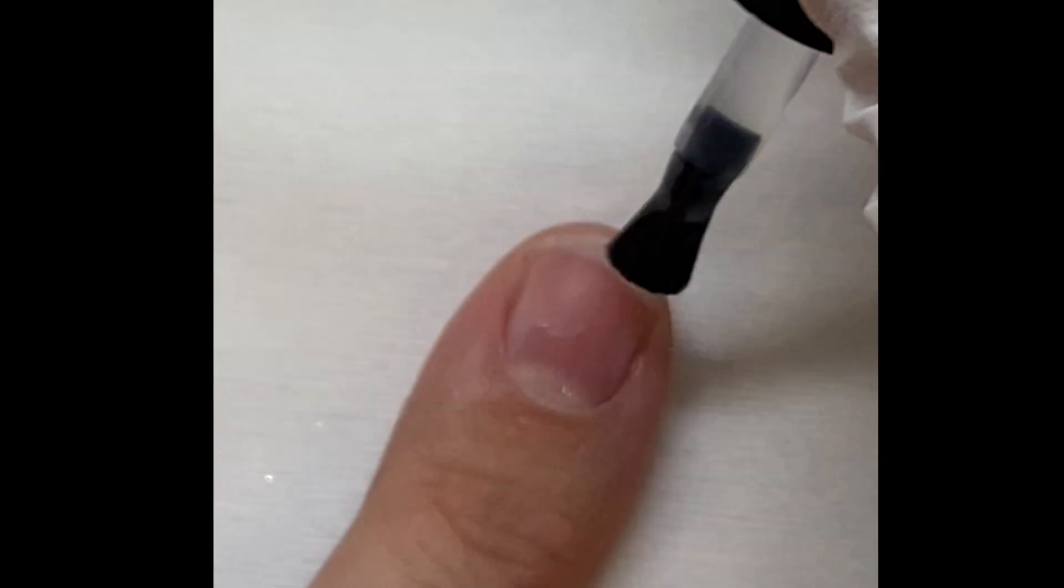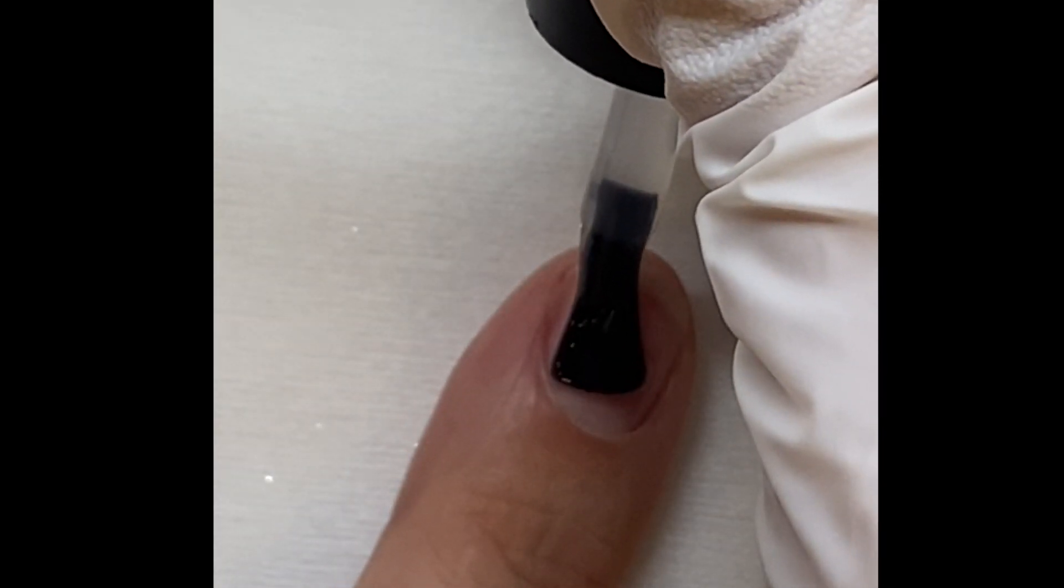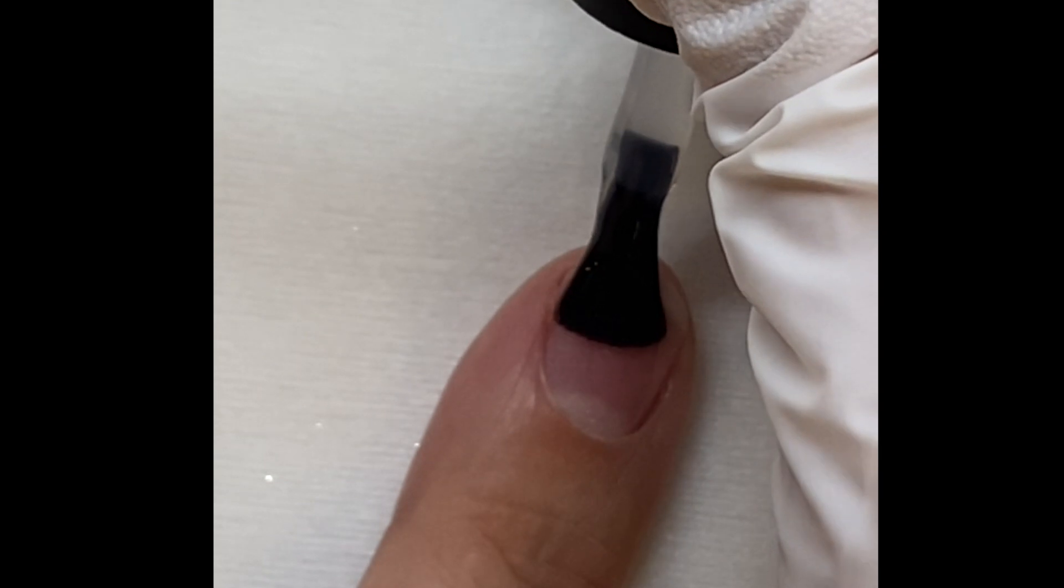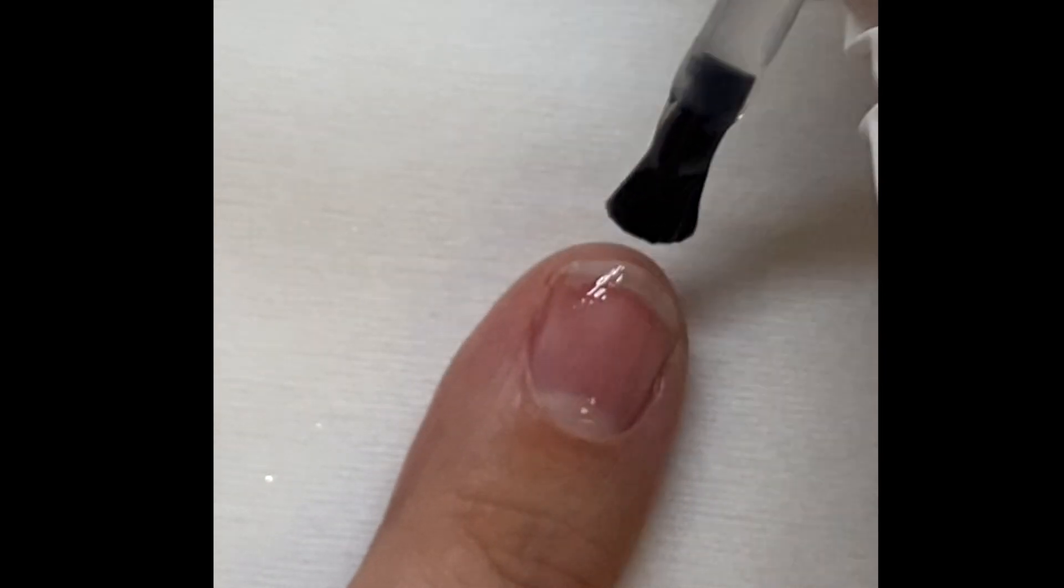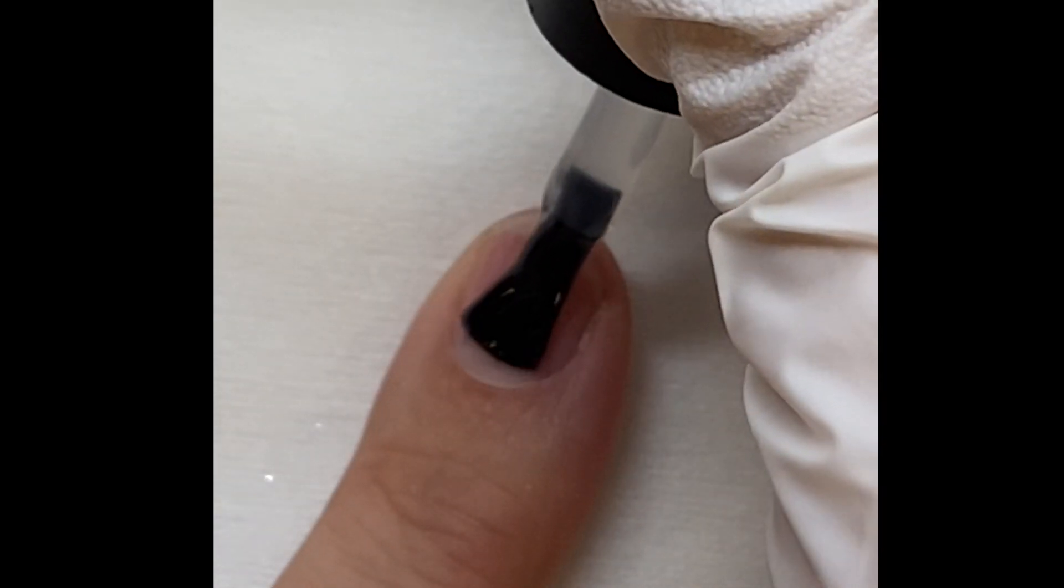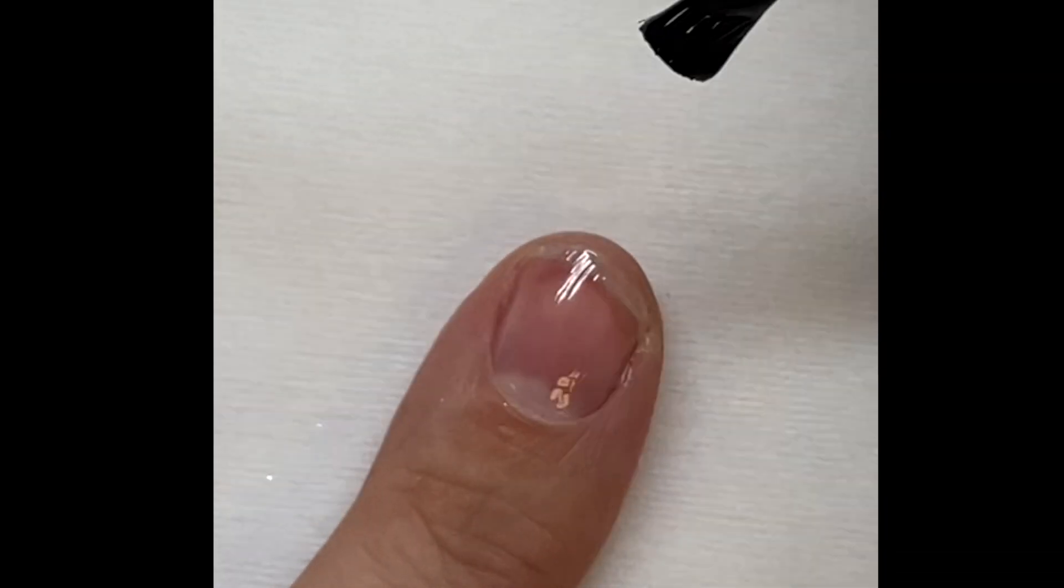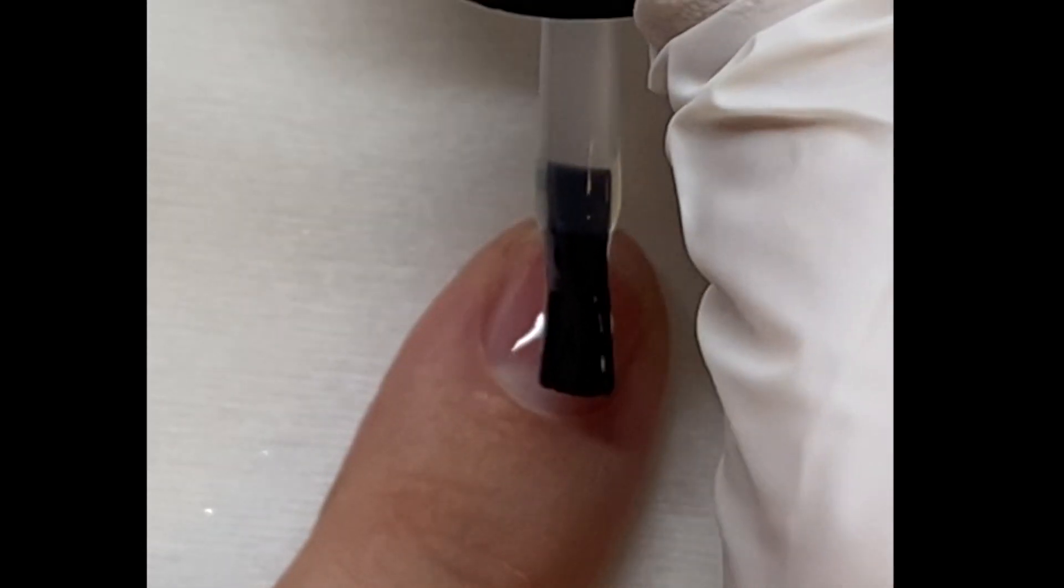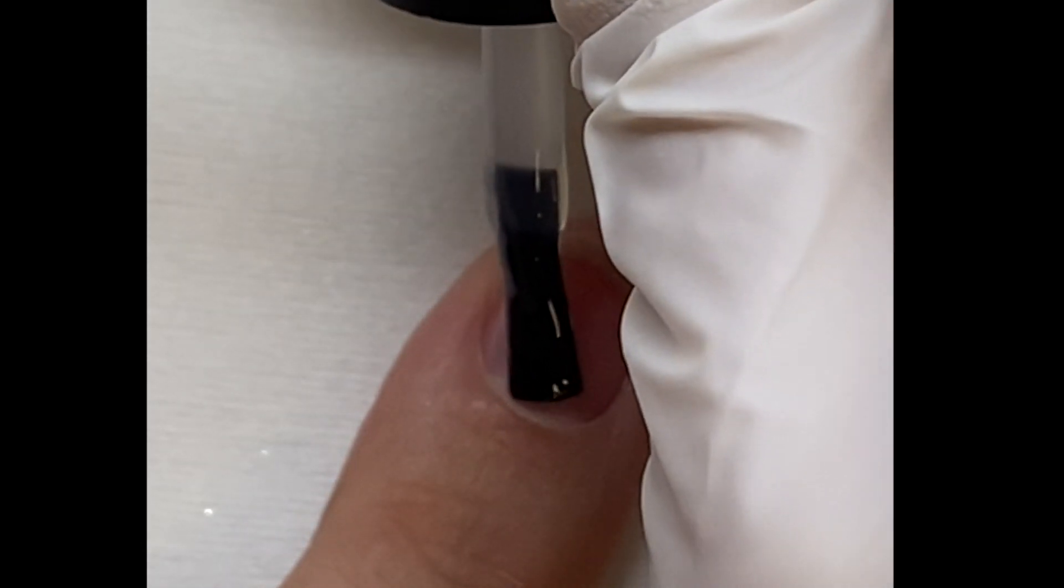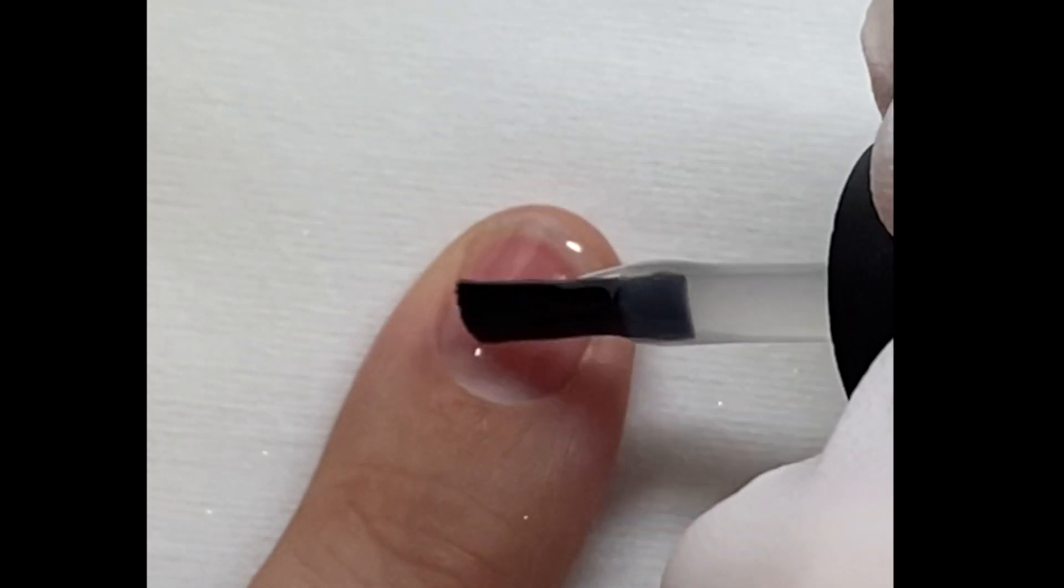We're going to begin by first dehydrating the nail with an acetone and alcohol mixture and then applying the Wildflowers base. Now the base is thick, it's not like other bases that are thin, and I love that about this base.